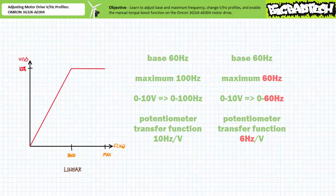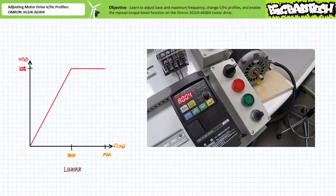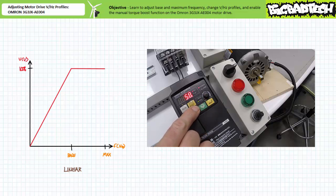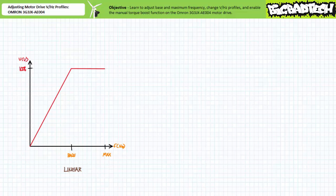Let's see if this is the truth. Navigate to parameter A004 maximum frequency. Select mode, decrement from the previously saved 100 hertz back to 60 hertz, then select enter to save it. This motor drive has now been programmed to scale the zero to 10 volt analog voltage input of the external speed potentiometer from zero to 60 hertz in 6 hertz per volt divisions.